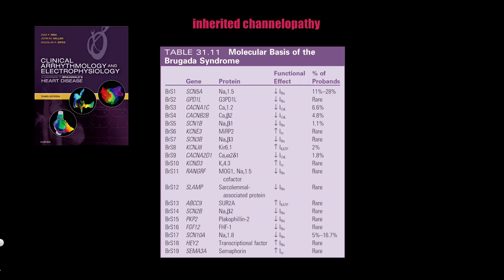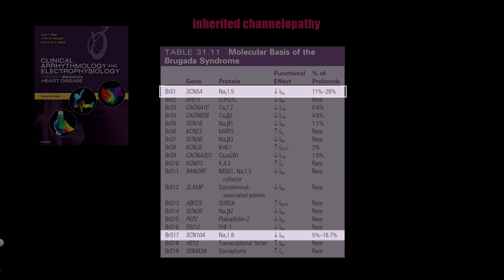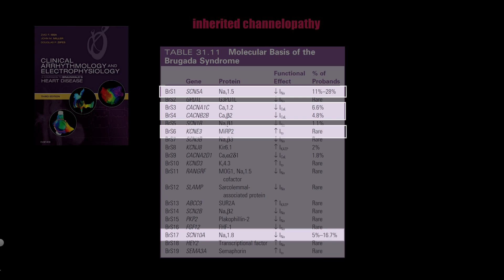Starting with inherited channelopathy: there are many gene mutations that form the molecular basis of Brugada syndrome. The most prevalent are the SCN5A and SCN10A gene mutations, which encode different parts of the cardiac sodium channel. The sodium channel is responsible for phase 0 of the action potential, so mutations decrease sodium influx through phase 0. Also prevalent is a calcium channel mutation, which decreases calcium influx through the L-type calcium channel during the plateau phase. Sometimes the cause is a gain-of-function mutation of outward potassium channels responsible for phase 1.